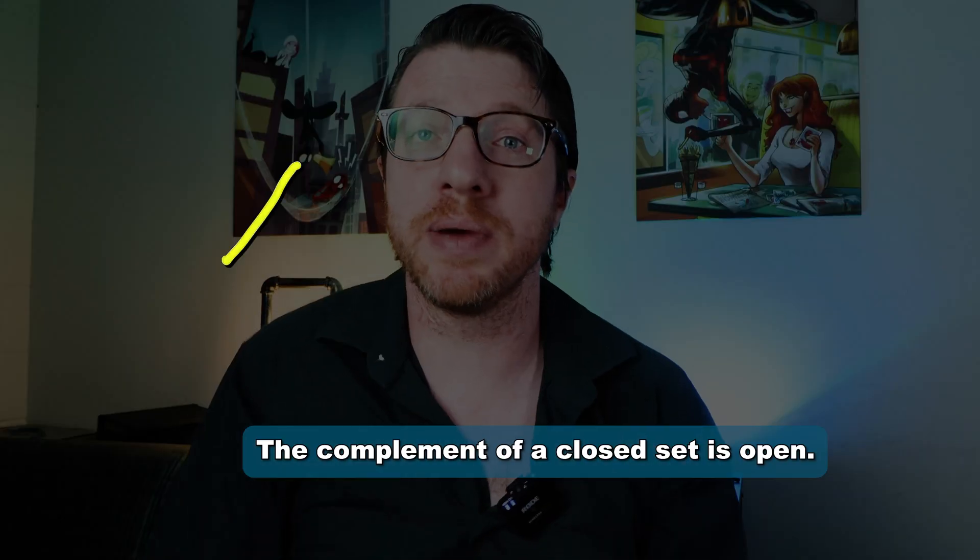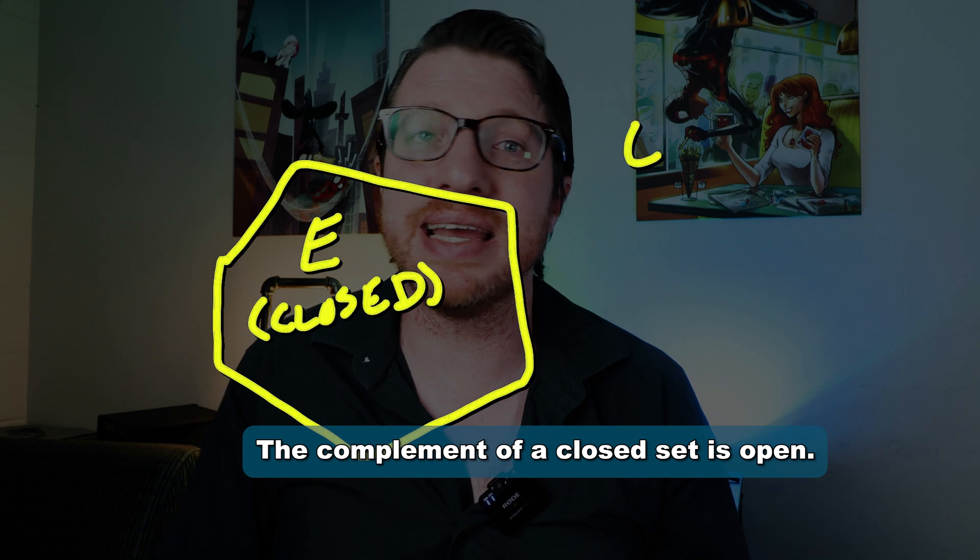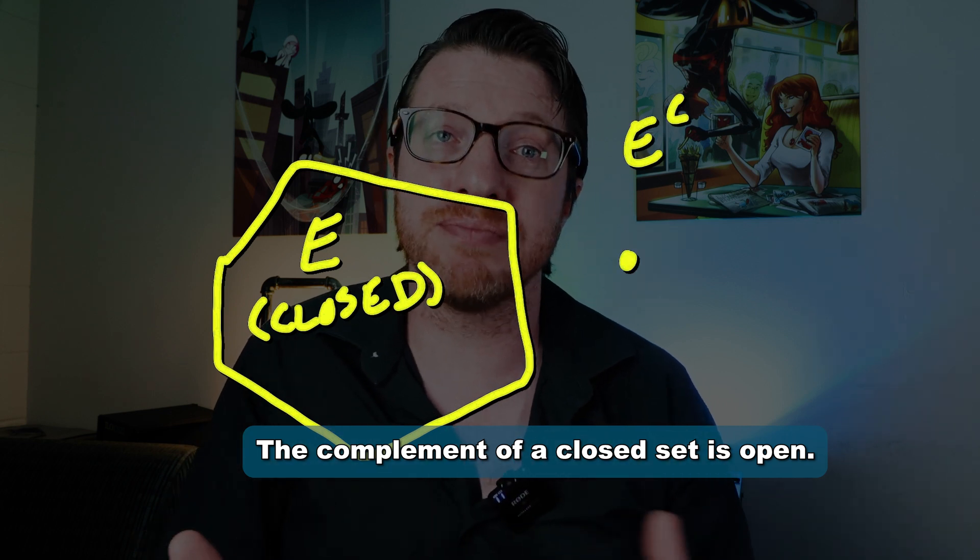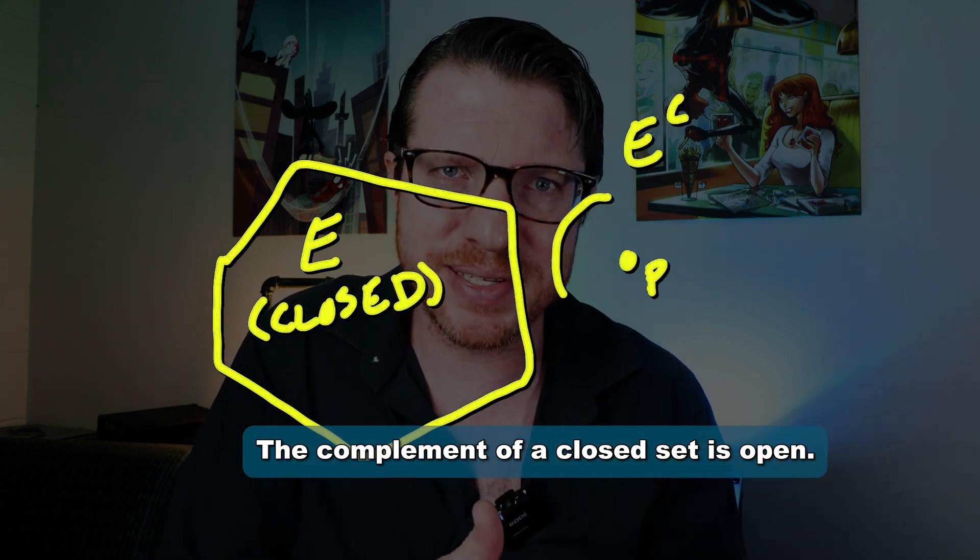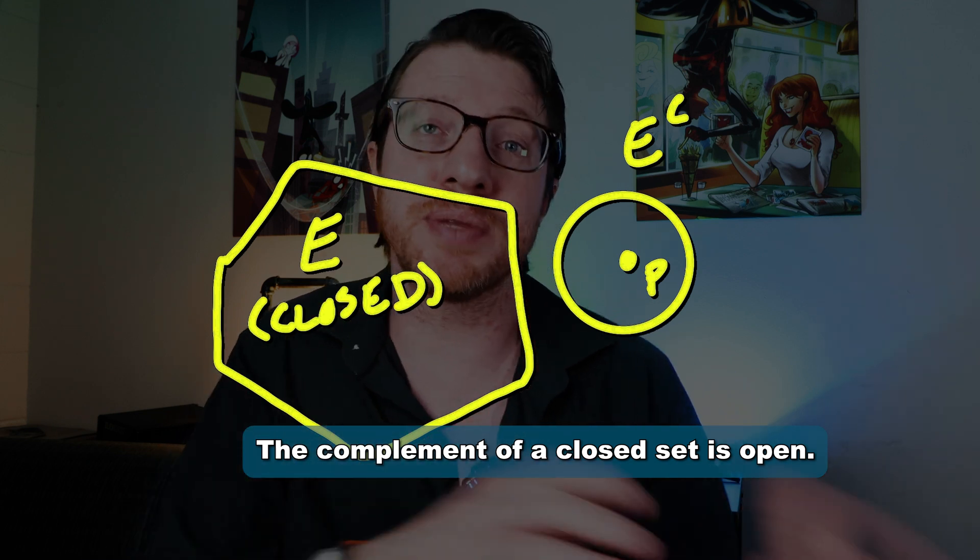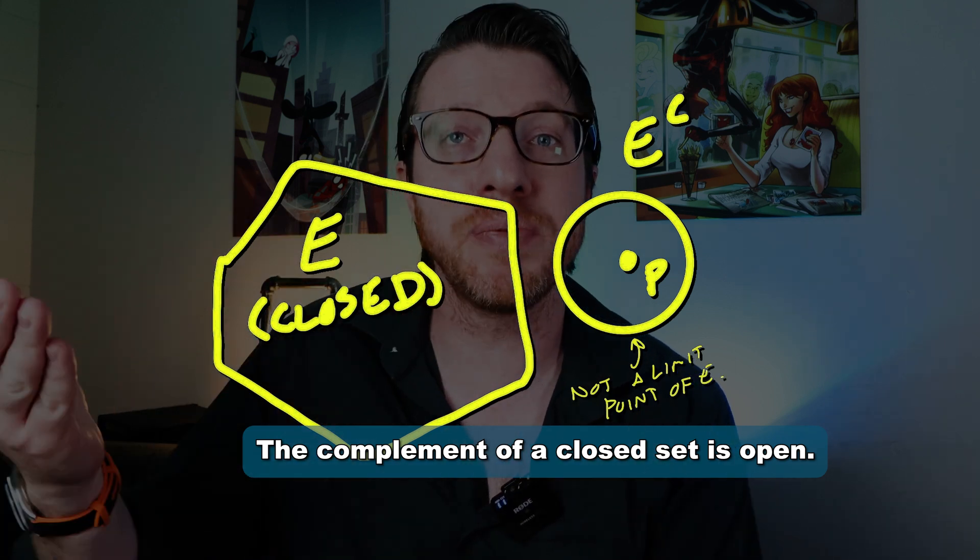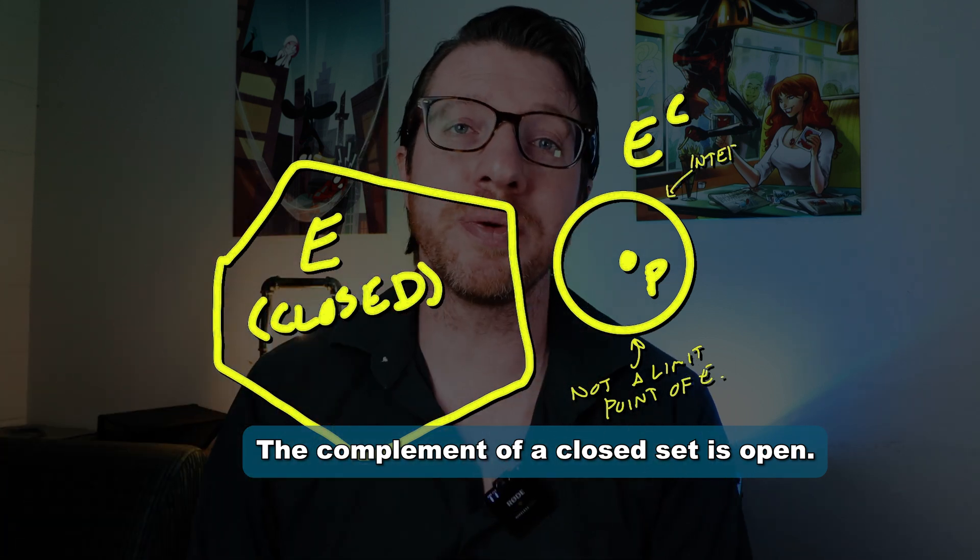Something that is neat from this definition is that the complement of a closed set is open. That's because if a point p is in the complement of the closed set, then it isn't a limit point of that set, since closed sets have all their limit points. And so there has to be some neighborhood about that point that is disjoint from the closed set. That means that the neighborhood is contained completely in its complement. So the complement is open.